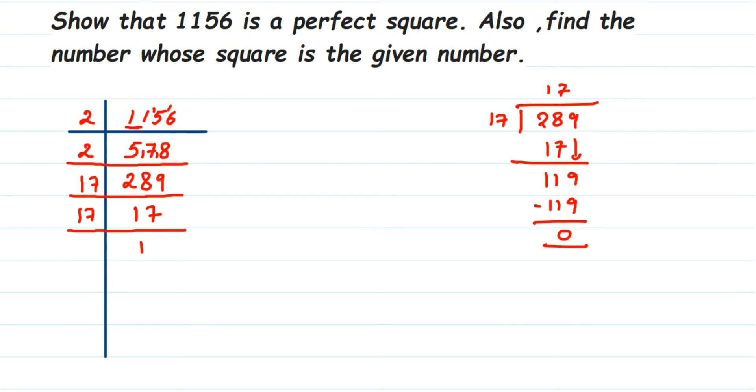Now the next question is 'find whose square the given number is.' We just find out the square root of this number. First, I'm going to write down the number here: 1156 is equal to 2 into 2 into 17 into 17. Write down the prime factors you got here.